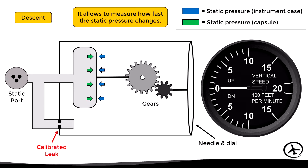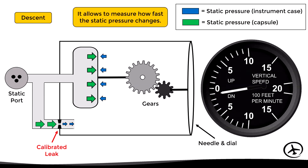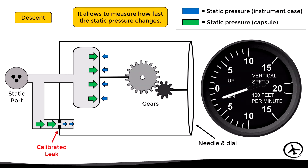Let's look at the descent scenario first. In this case, the static pressure will increase in the capsule almost immediately; however, inside the case the pressure doesn't increase that fast due to the calibrated leak, which restricts the flow to the case. This way a temporary pressure difference is created between the capsule and the case, causing the capsule to expand and move the gears to indicate a rate of descent.